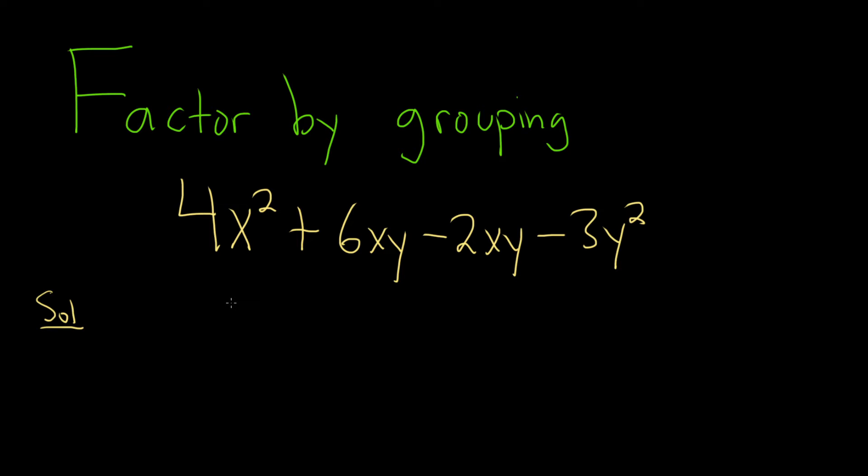So when you start the process of factor by grouping, you first just pick two terms, and then you see if you can factor something out from those two terms. So let's pick the first two and see what happens. So what is the greatest common factor here?